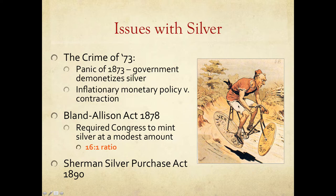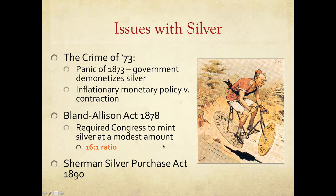Look at this political cartoon: a man riding a bicycle where one wheel is gold and one is silver. Is it pro-bimetallism or anti-bimetallism? To placate farmers and soft money advocates, five years later in 1878, Democrat Bland and Republican Allison created the Bland-Allison Act. It required Congress to start minting silver again, but at a very modest amount. The ratio — 16 ounces of silver to one ounce of gold — is something very important to remember.